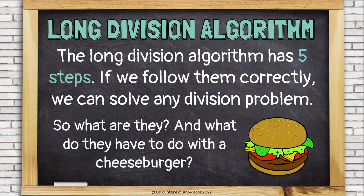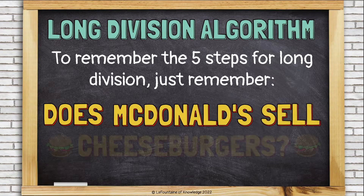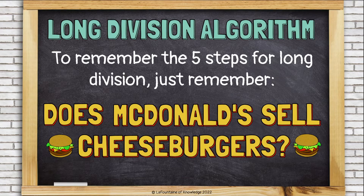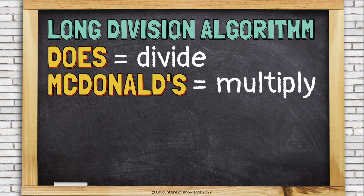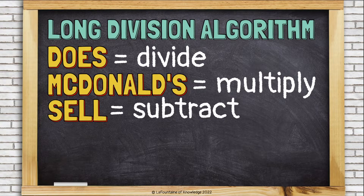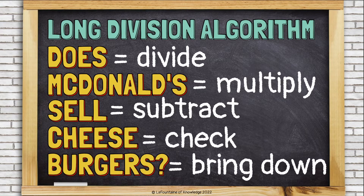So what are they and what do they have to do with a cheeseburger? To remember the five steps for long division, just remember: Does McDonald's sell cheeseburgers? 'Does' stands for divide — that's the first step. 'McDonald's' stands for multiply, 'sell' is subtract, 'cheese' is check, and 'burgers' is bring down. So if you can remember 'Does McDonald's sell cheeseburgers?' you can remember the five steps.